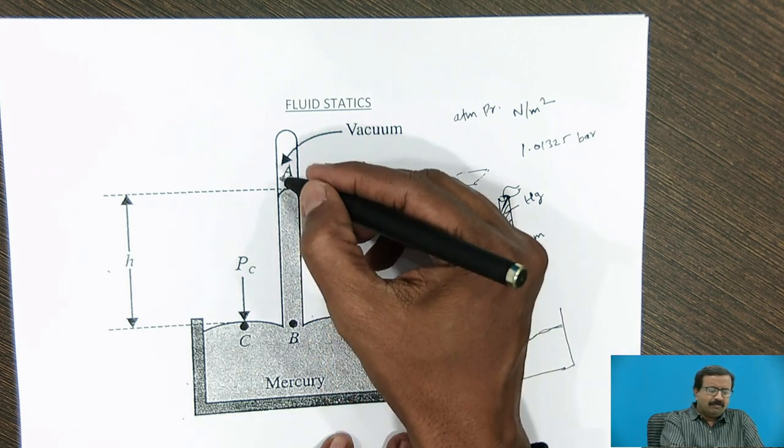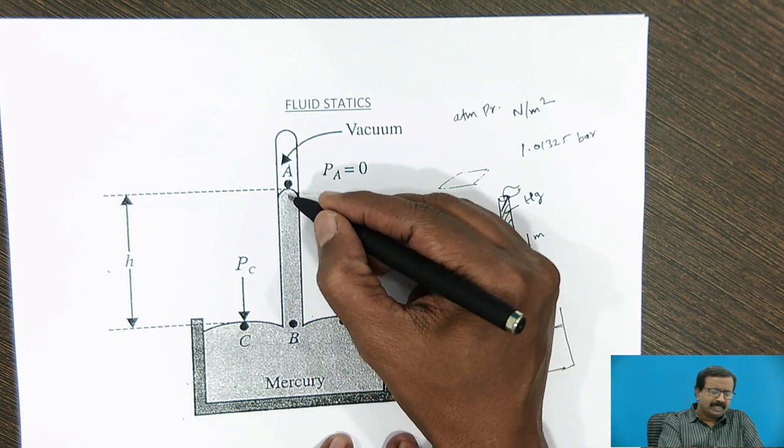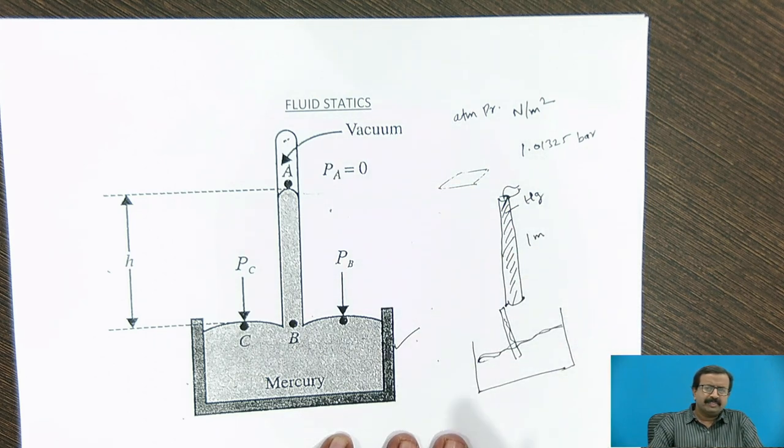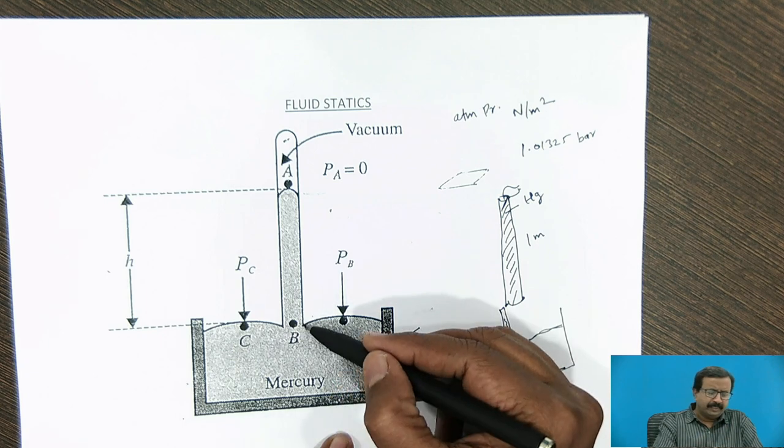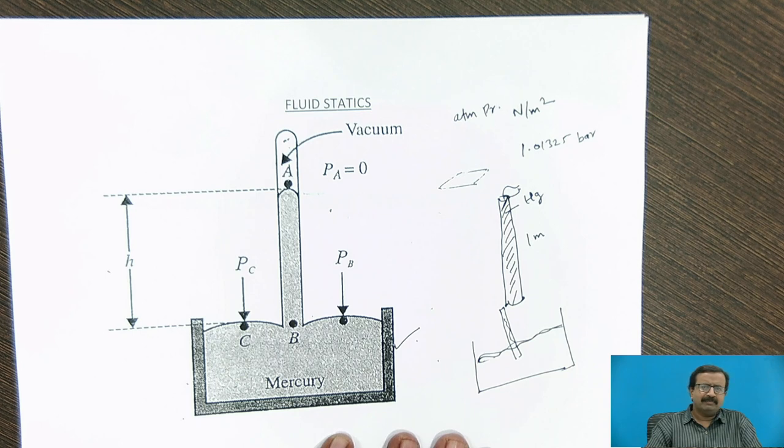So what happens? When we invert the particular tube in a mercury bath or mercury container, then mercury starts falling. You can see that in this particular portion where there was previously mercury, now what has happened? Because mercury is falling down, it is entering into this particular bowl, there is absolute vacuum. Actually it is vacuum. But theoretically speaking, some mercury vapours at low pressure are present. But for all our practical calculations, we assume that the vapour pressure exerted by this mercury at this particular point A is approximately zero.